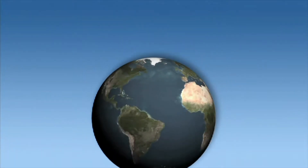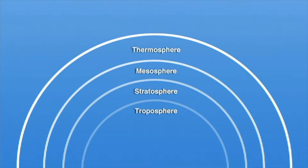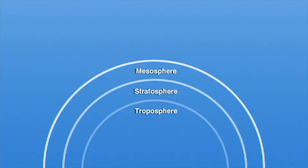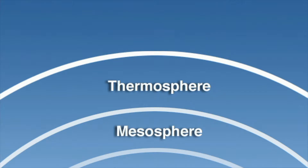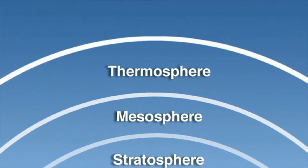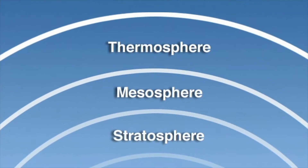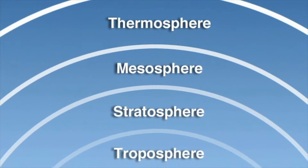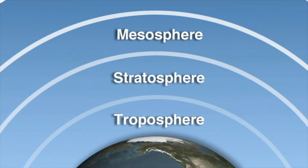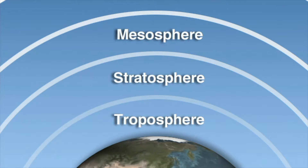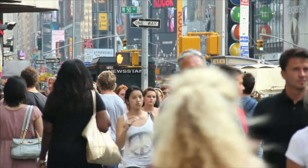The atmosphere has four layers. They are the thermosphere, mesosphere, stratosphere, and the troposphere. The thermosphere is the outside layer of the atmosphere. Beyond it is outer space. Below the thermosphere is the mesosphere. Beneath the mesosphere is the stratosphere. The troposphere is the layer closest to the surface of the planet. We live in the troposphere.